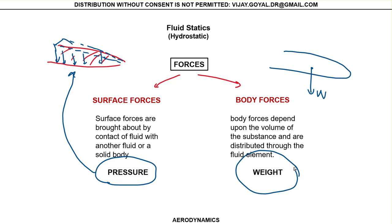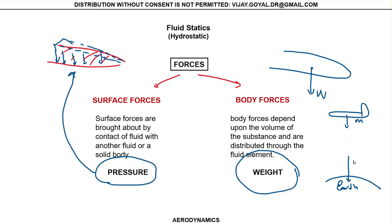Body forces are something that acts externally on the body. The airplane has mass, but the reason we have weight is because of Earth — Earth creates a gravitational force pulling the aircraft down, and that is mg. This is a result of another phenomenon; for instance, electromagnetic fields can cause forces not generated directly on the body — those are indirect forces. So weight is the only body force we consider in this course.